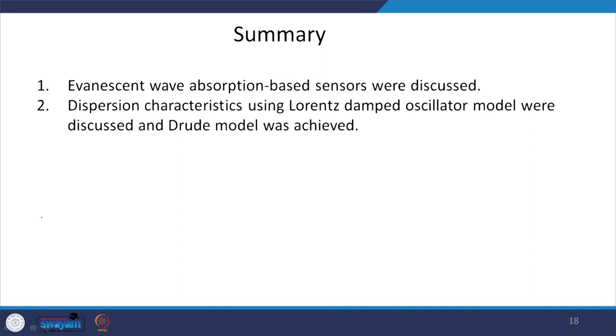In summary, today we discussed evanescent wave absorption sensors, the dispersion characteristics modeled using the Lorentz damped oscillator, and derived the Drude model. We modeled the material as a system of damped electron oscillators, solved the equation of motion, and obtained the dielectric constant. If it has an imaginary part, the material is absorbing; if only a real part, it is transmitting. The plasma frequency ωₚ is the threshold: below it the material is absorbing, above it it becomes radiative or transmitting.